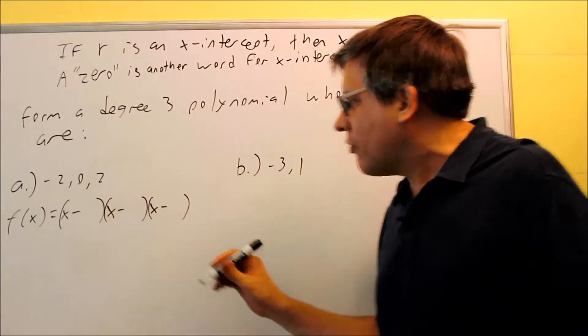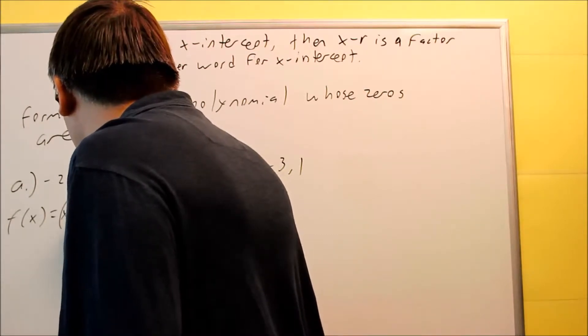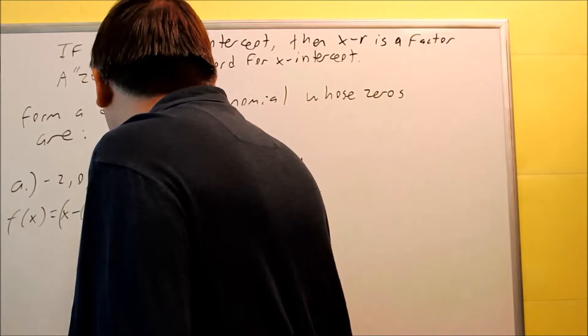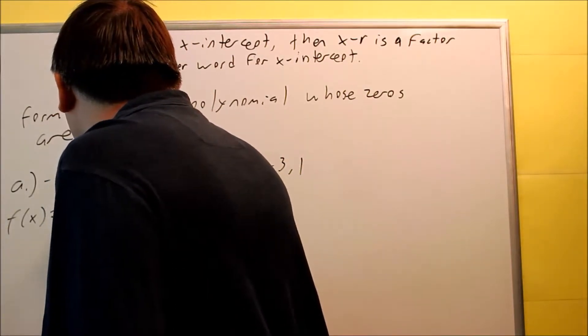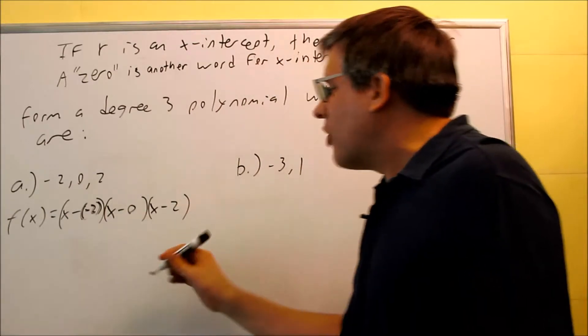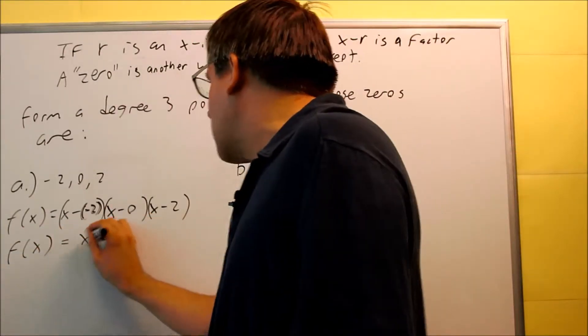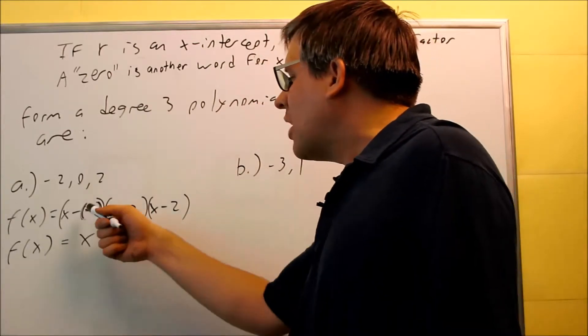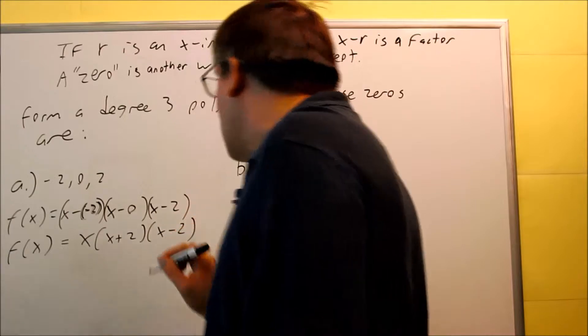So we have a negative 2, and then a 0, and then a 2. So by putting these in right here, we can simplify, and we get x minus 0 is x. I'll just put that one out front. Minus and minus, that's x plus 2, and then I have x minus 2.